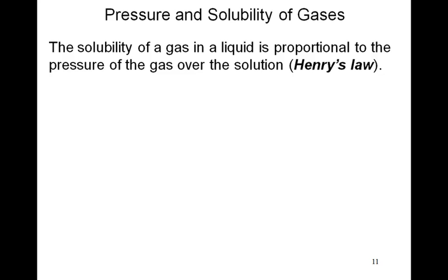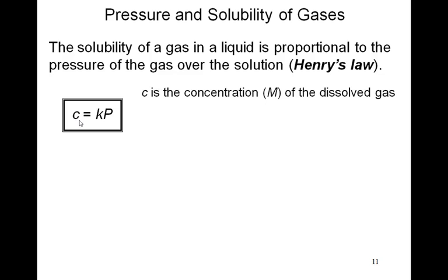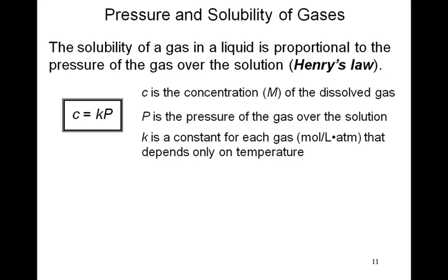Pressure and solubility. The solubility of a gas in a liquid is proportional to the pressure of the gas over the solution. This is known as Henry's Law. Henry's Law says that the concentration C in moles per liter of the dissolved gas is equal to a constant K times the pressure of the gas over the solution. And again, K is a constant for each gas, and its units are the mole per liter atmosphere. And then it depends only upon temperature. The value of K depends only upon temperature.